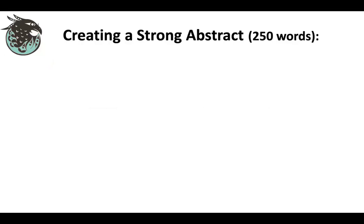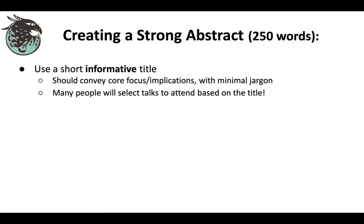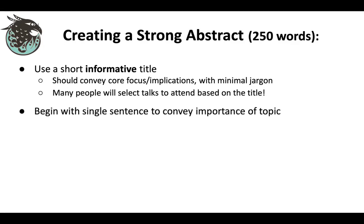Let me go through each of those pieces in more depth. First is the title — it should be short and informative, conveying the core focus and implications with minimal jargon. A lot of people select the talks they'll attend based on the title alone, so it really is a very important piece. You should then begin with a single sentence conveying the importance of your topic and setting the conservation context.